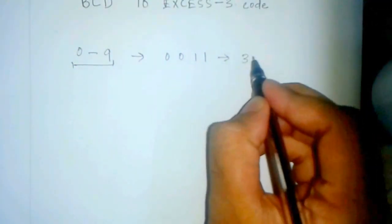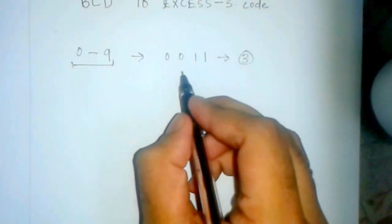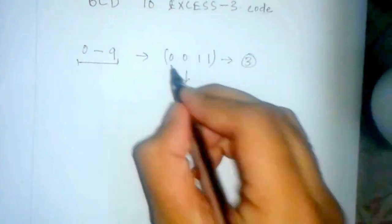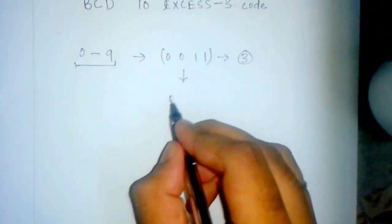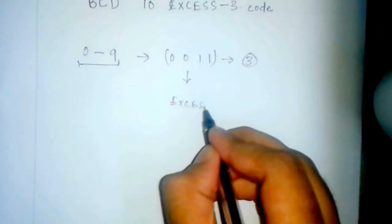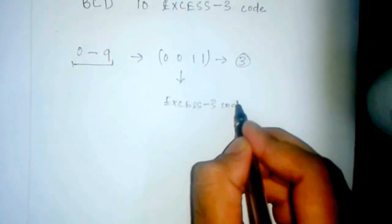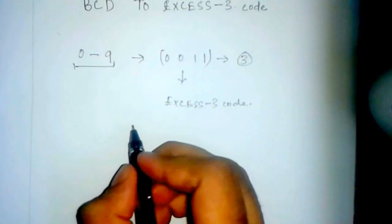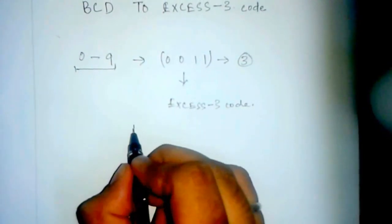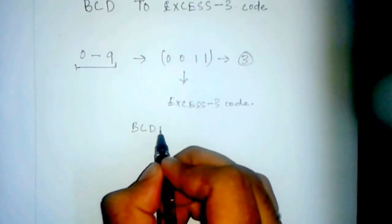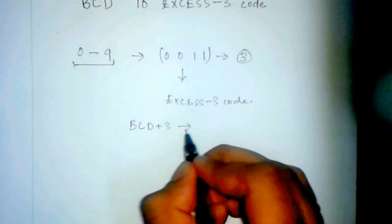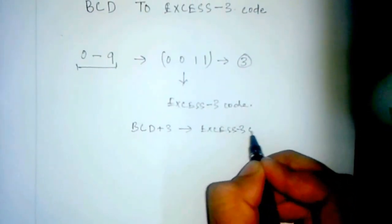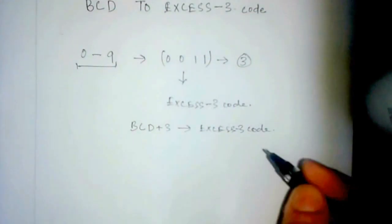We should convert it to XS3 code. The main formula behind this is simple: just add 3 to the BCD number and you will get the XS3 code.